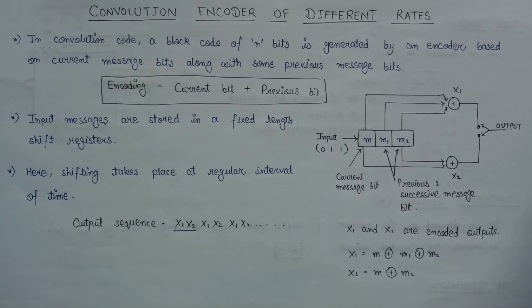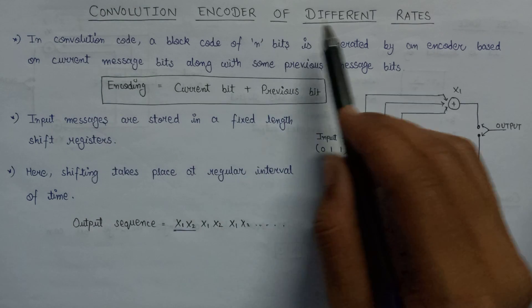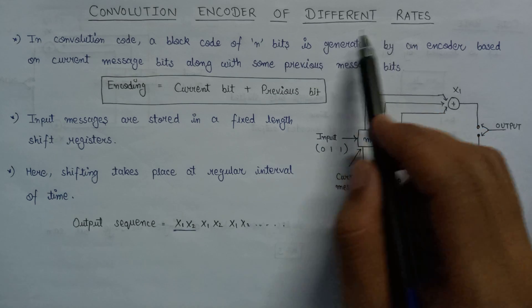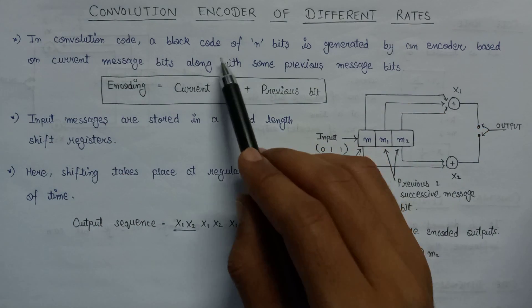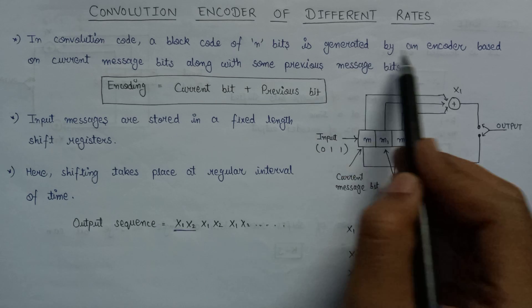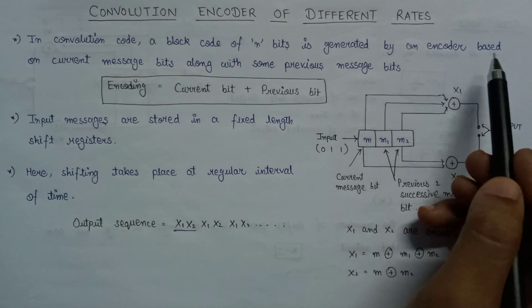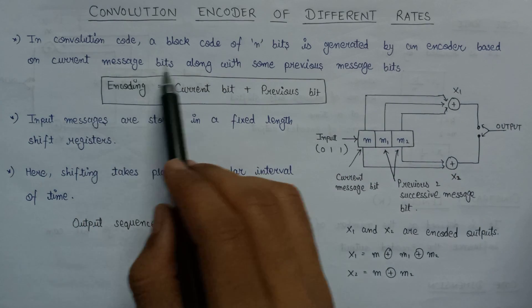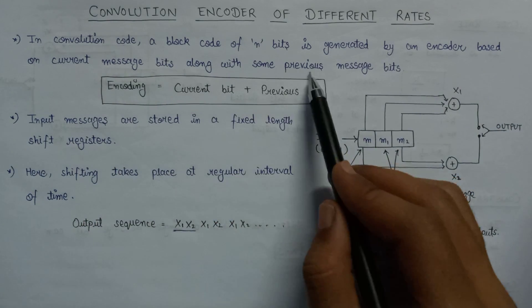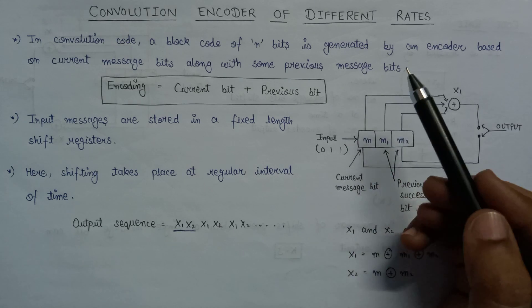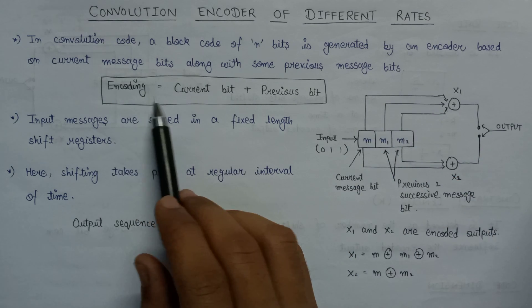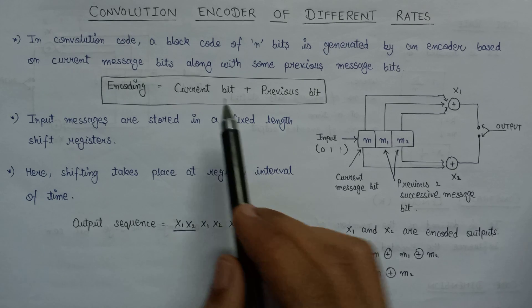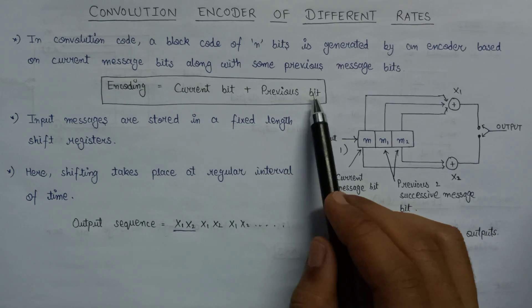Hi everyone. In this lecture we are going to learn about convolution encoder of different rates. In the convolution code, a block code of n bits is generated by an encoder that is based on the current message bit along with some previous message bits. Or we can say that the task of encoding is performed on the basis of current bits plus previous bits.